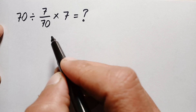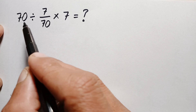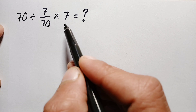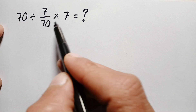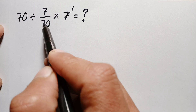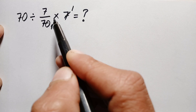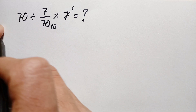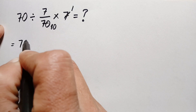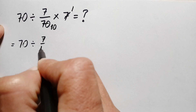Hello everyone, you are welcome. What is the correct answer of 70 divided by 7/70 times 7? In this multiplication we can cancel this 7 with 70, so 7 times 1 is 7, and 7 times 10 is 70. So this will become 7/10, and therefore this number will become 70 divided by 7/10.